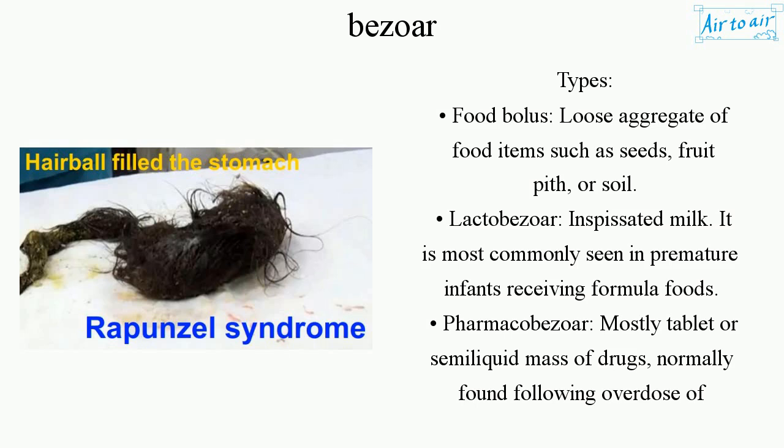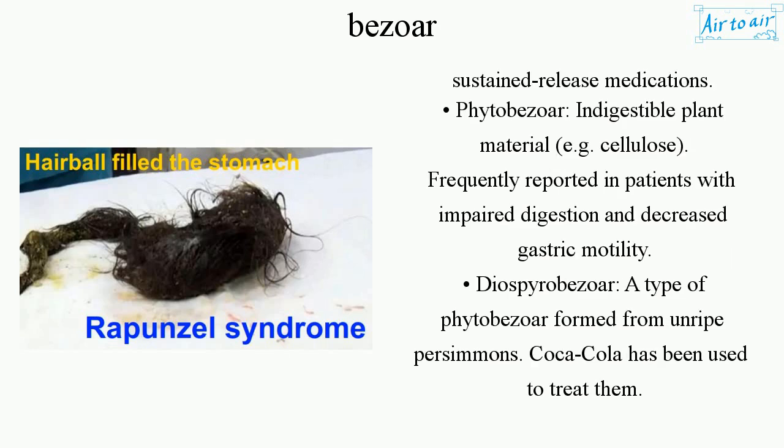Pharmacobezoar: mostly tablet or semi-liquid mass of drugs, normally found following overdose of sustained-release medications. Phytobizor: indigestible plant material, e.g., cellulose, frequently reported in patients with impaired digestion and decreased gastric motility.